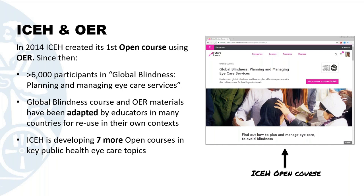We decided we wanted to reach out across our traditional boundaries. We've been running a master's course for many years, but thought we could reach many more people by getting into open courses and open education resources. So we created our first open course, Global Blindness: Planning and Managing Eye Care Services, in 2014, and have been running it on the FutureLearn platform. More than 6,000 people have accessed this course so far, with very good feedback from both learners and educators who've downloaded materials, adapted them, and used them in their own contexts.